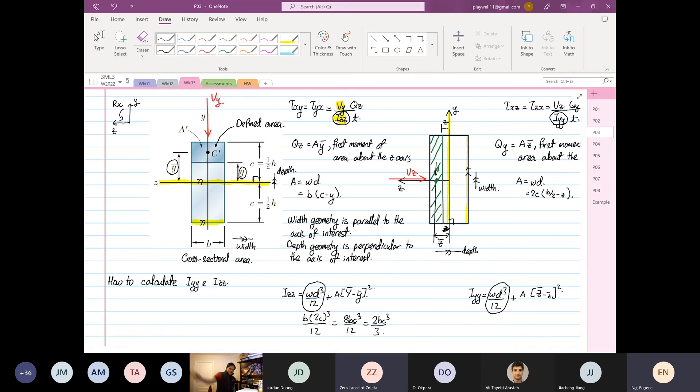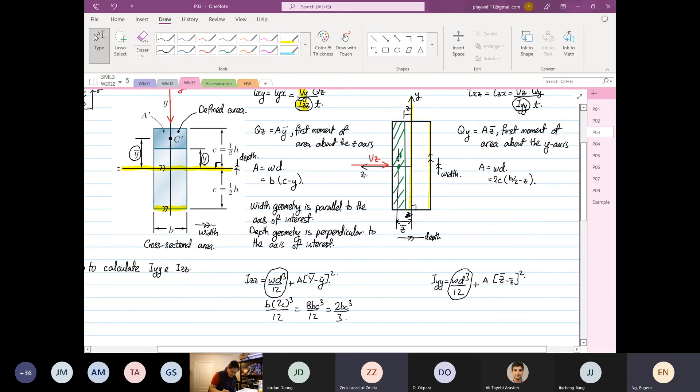Now let's go towards the right hand side. So the width for this case is your 2C. And your depth is your B. So this is equal to B cubed C over 6. Different, yeah? IYY is not equal to IZZ.